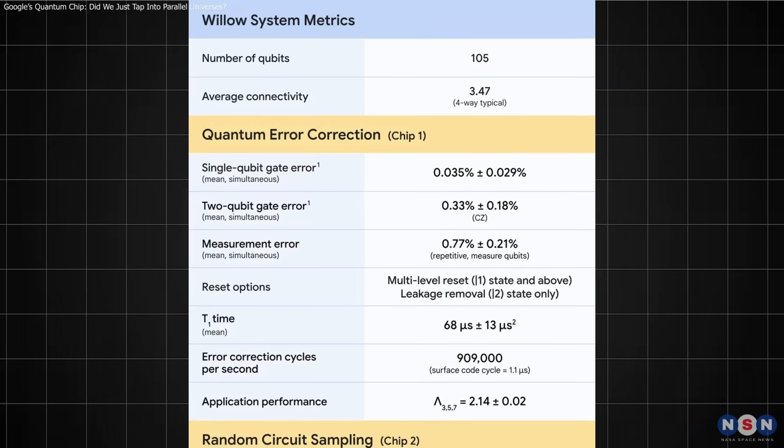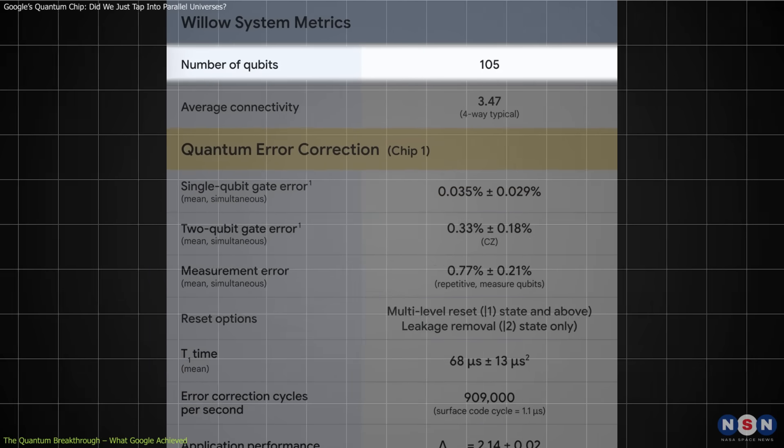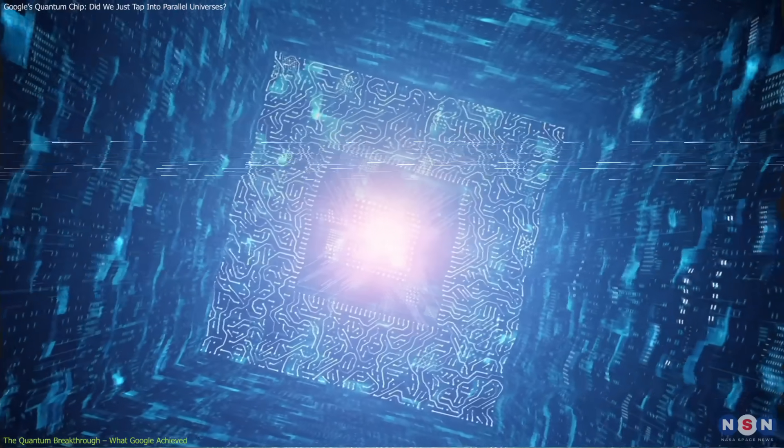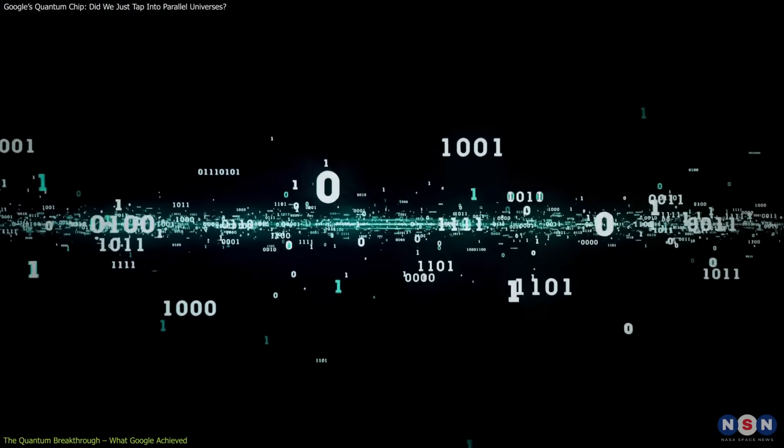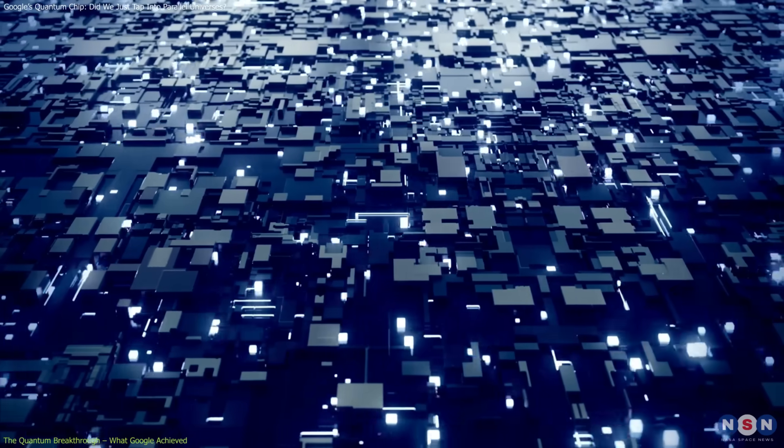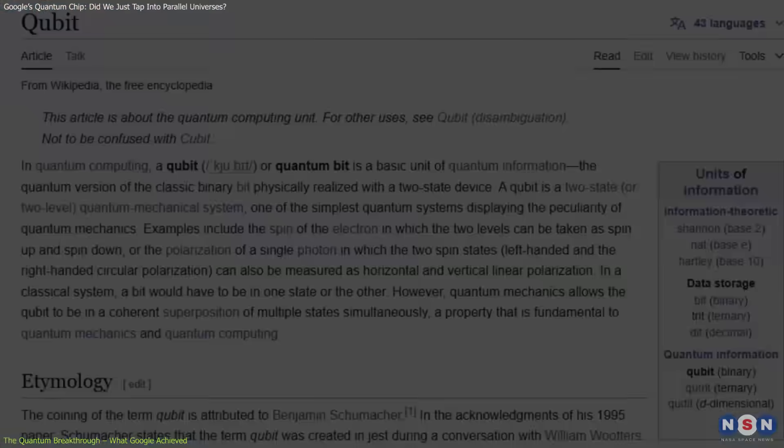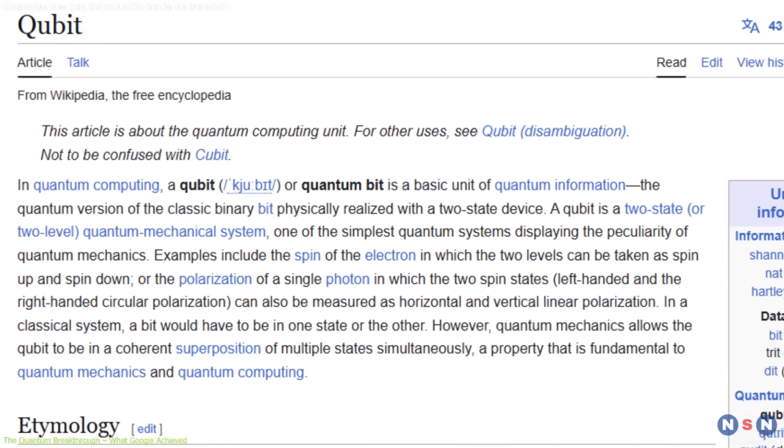Google's Willow chip is a 105-qubit quantum processor. Now, if you're wondering why that's a big deal, let's start with the basics. Classical computers use bits, zeros and ones, to process information. Quantum computers, on the other hand, use qubits, which leverage two principles of quantum mechanics: superposition and entanglement.